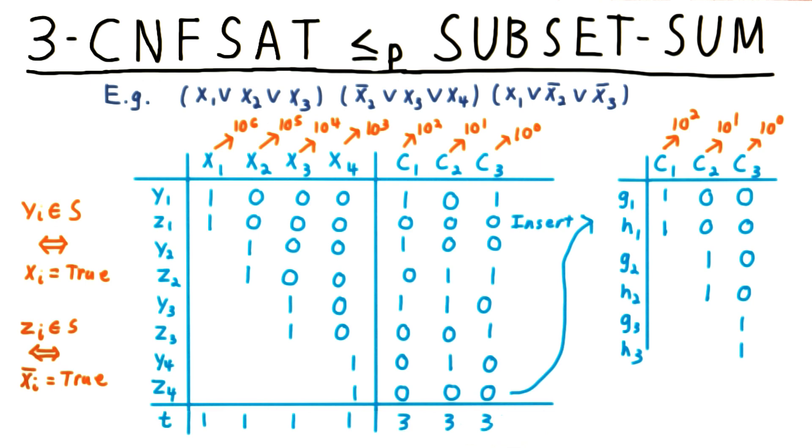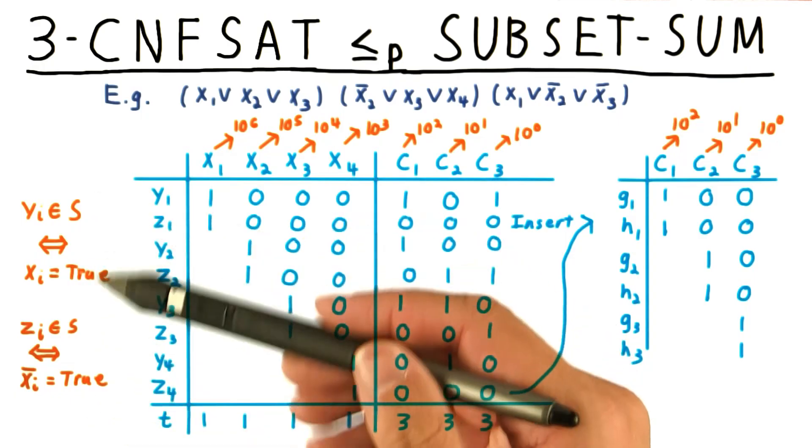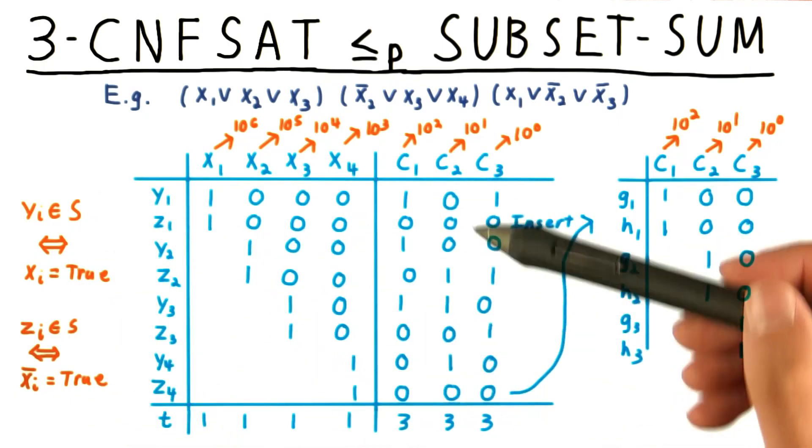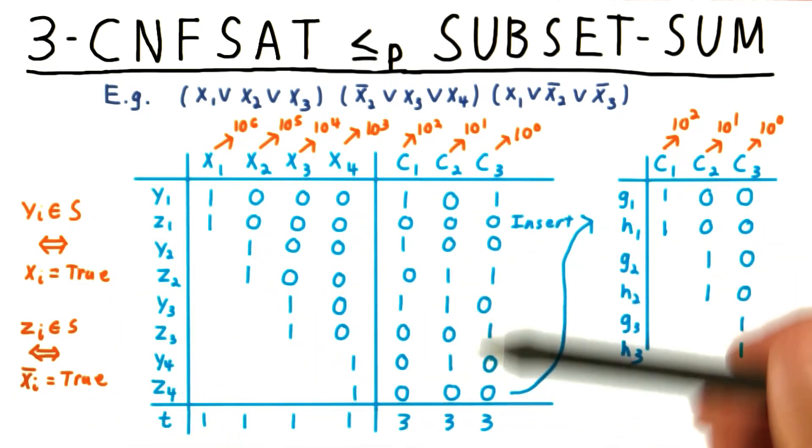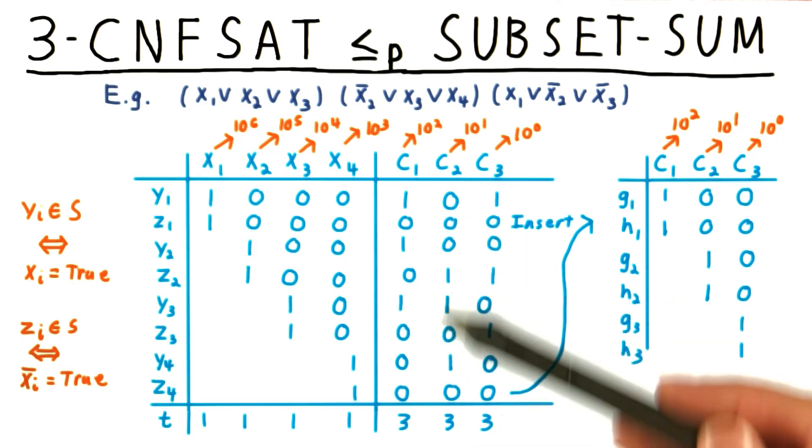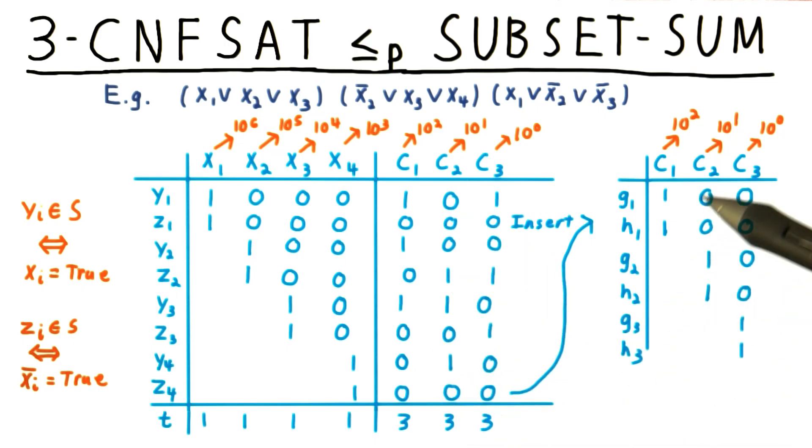Given a satisfying assignment, the corresponding choice of y and z numbers will have at least a one in all the clause columns, but no more than three. All the ones and twos can be boosted up by including the g and h numbers. Note that if some clause is unsatisfied, then including the g and h numbers isn't enough to bring the total to three, because there are only two of them.